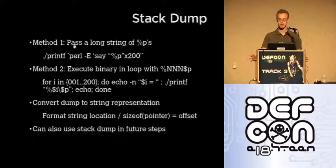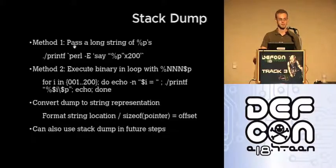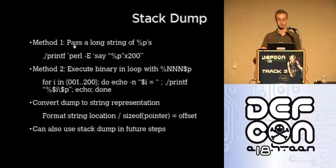The first thing you have to do is stack dumps — two methods. One, you just dump the whole stack at once using a bunch of percent P's or percent X's. The second method is to execute a loop with incrementing values. In this case I have here just a little bash script. I'll show you a demo that makes it really convenient to show what's on the stack. You then take this stack information — based on percent P or percent X which is going to be code pointers — and convert it to the string representation of that data. By doing that, you basically can find the actual string located through those pointers, and then find the offset of that string from the stack dump.